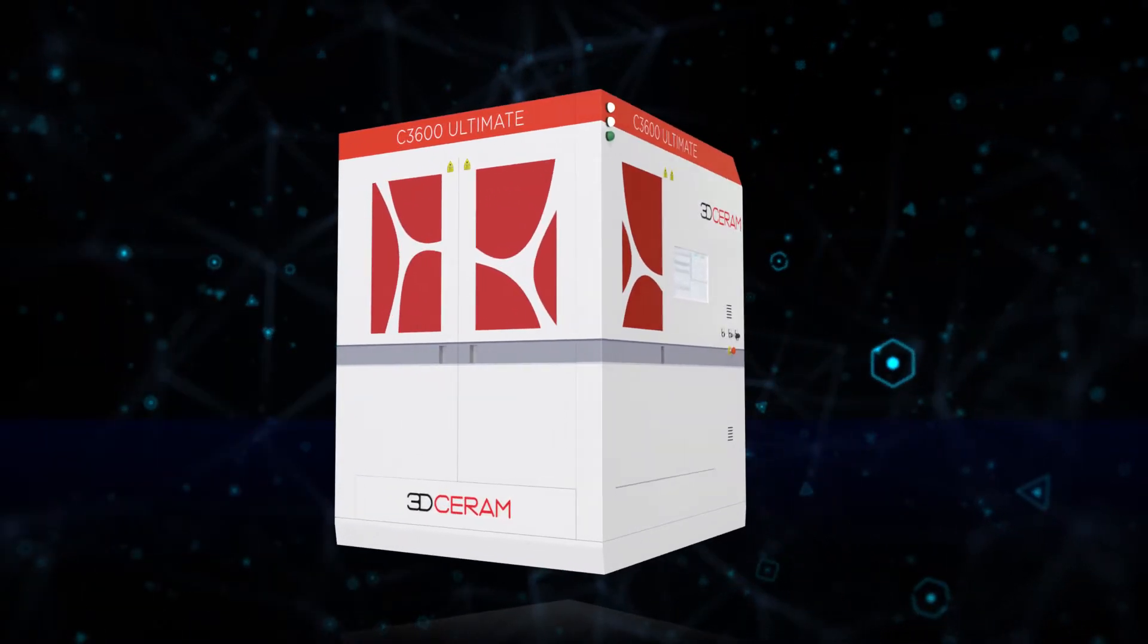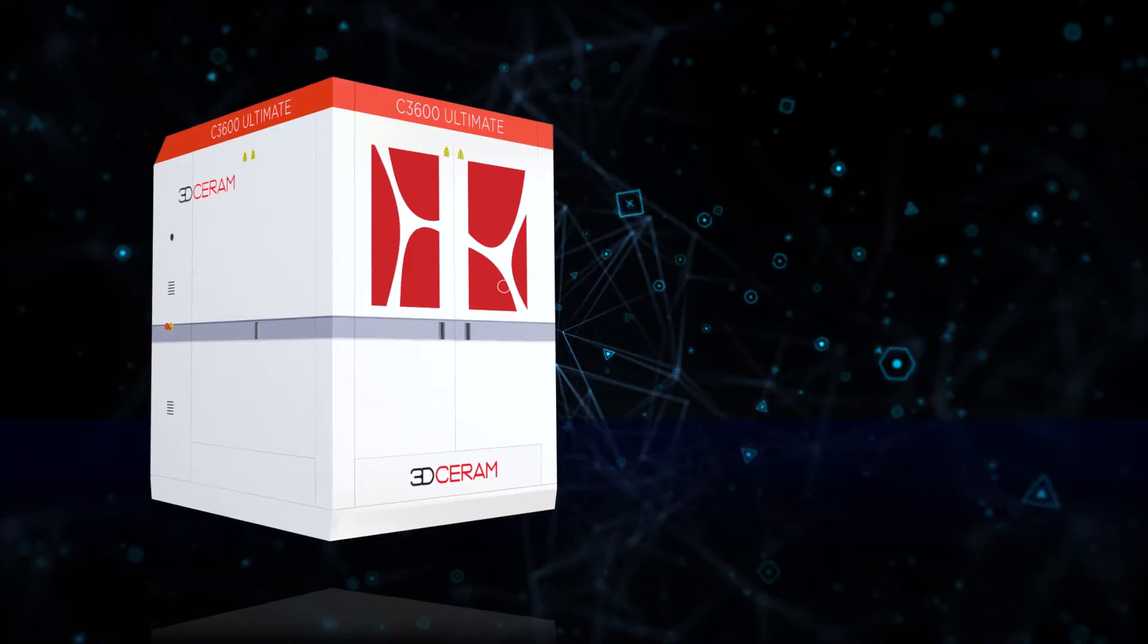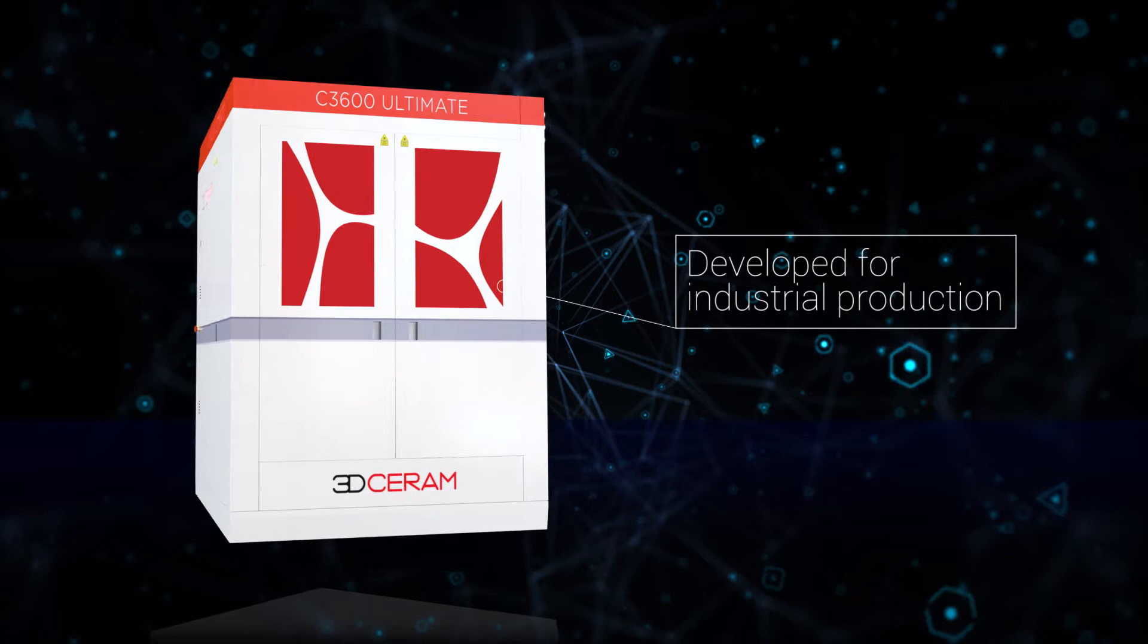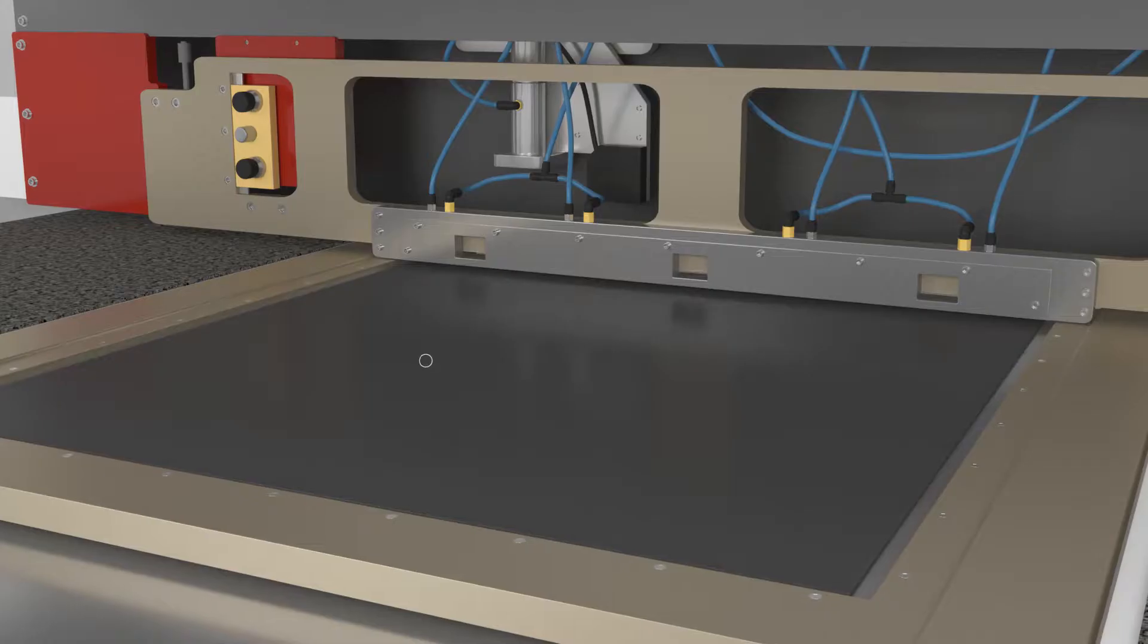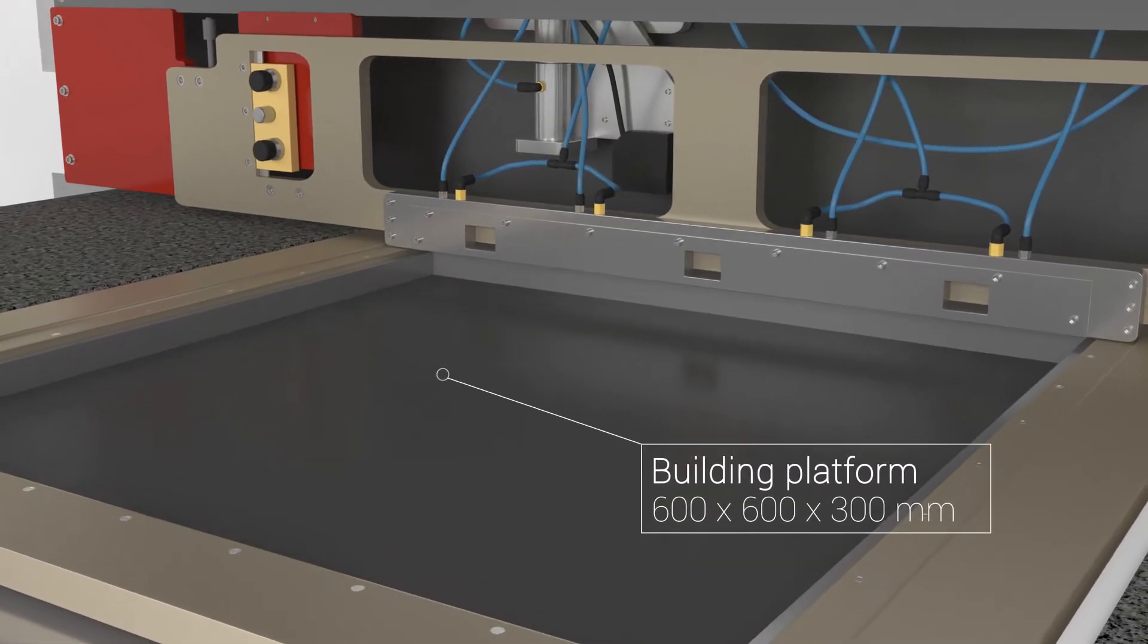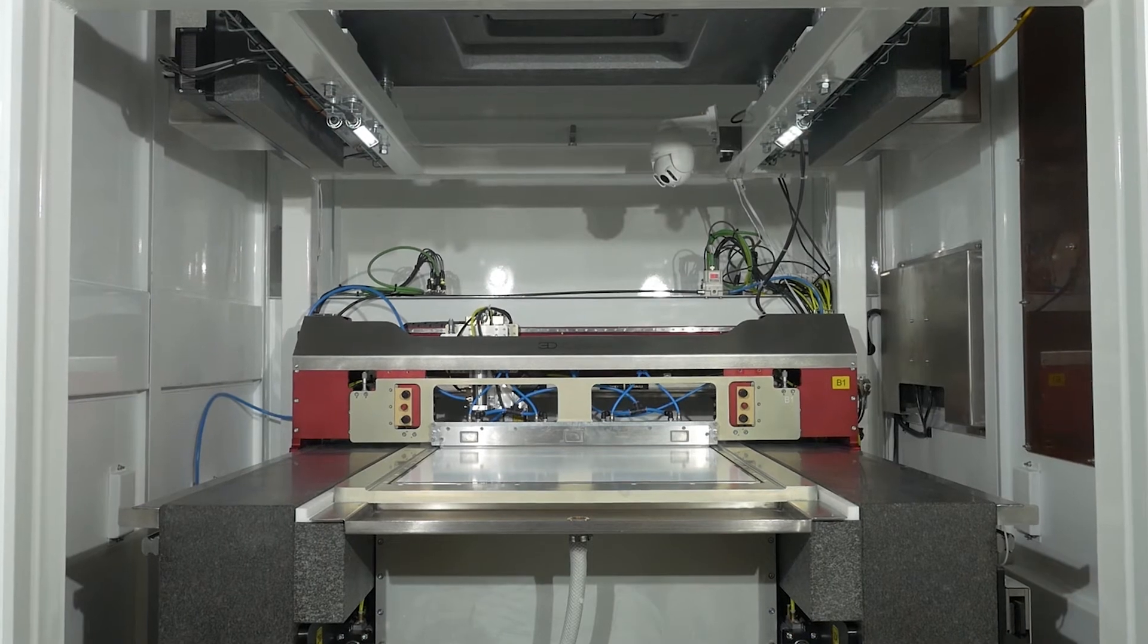Mass customization of technical ceramics has arrived with the C3600 Ultimate. Developed for industrial production needs, this printer offers the ability to produce either large parts or a large series of parts on the 600x600x300mm build platform.